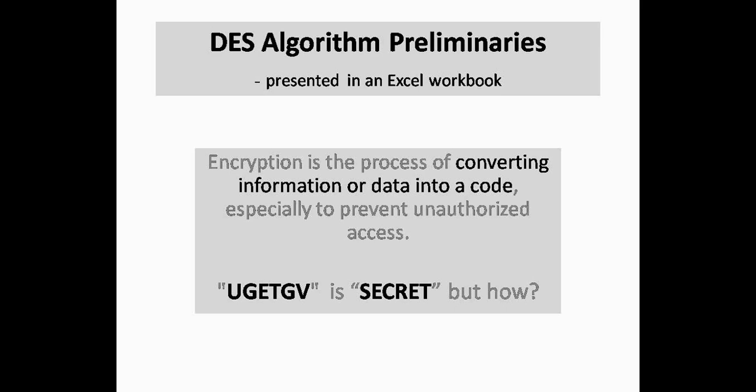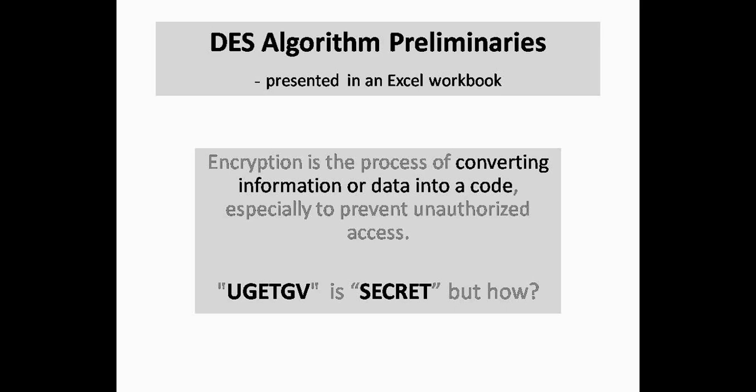Encryption is the process of converting information or data into a code especially to prevent unauthorized access. U-G-E-T-G-V is actually S-E-C-R-E-T. Wait for some more slides, you'll know how.